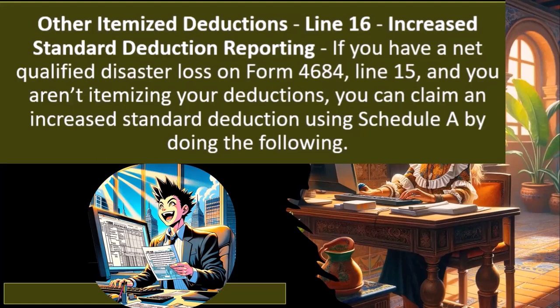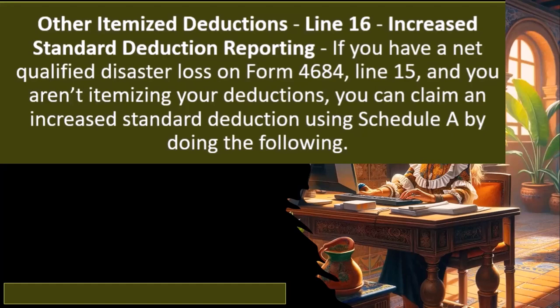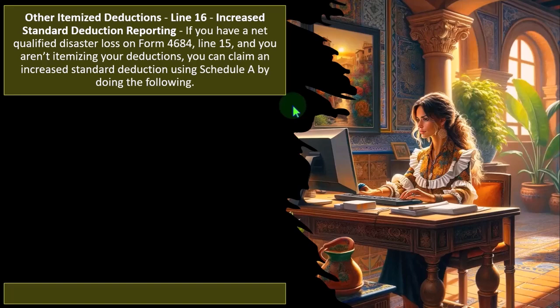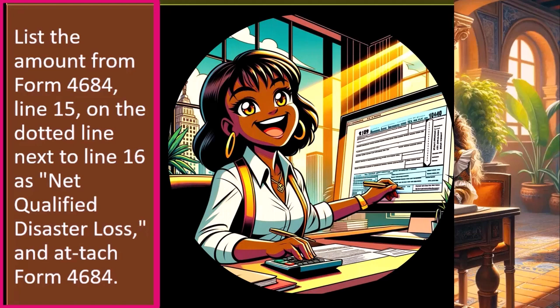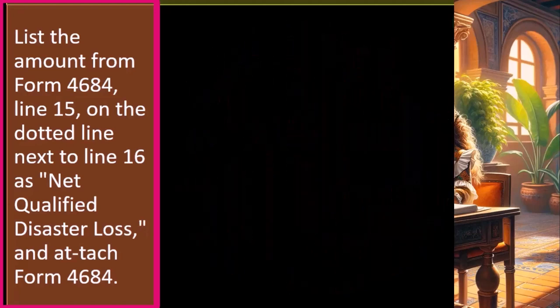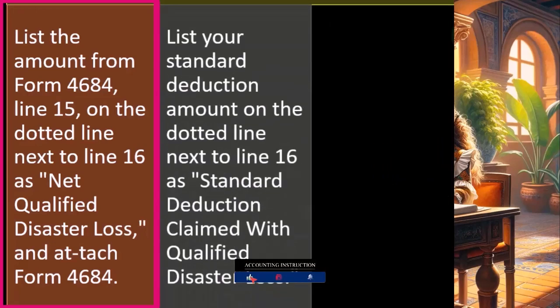So if you're going to allow the deduction on Schedule A, you might need an exception to allow a deduction on Schedule A even though you're taking the standard deduction rather than itemizing. List the amount from Form 4684, Line 15, on the dotted line next to Line 16 as 'net qualified disaster loss' and attach Form 4684. As a tax preparer, you'll want to do your research and be ready for this documentation — the software will help a lot because it should list the disaster loss and help you appropriately calculate it. Keep in mind this is strictly restricted to a net qualified disaster loss.